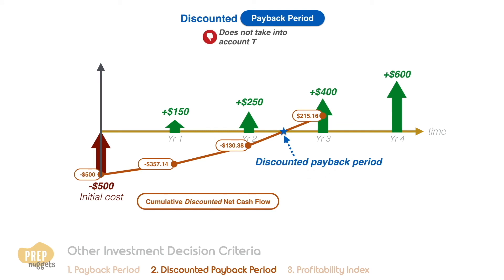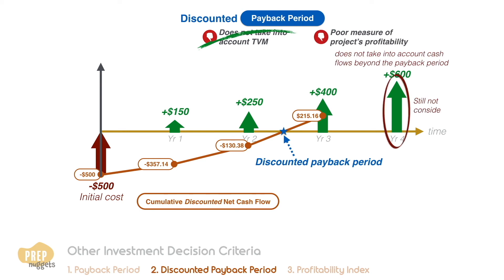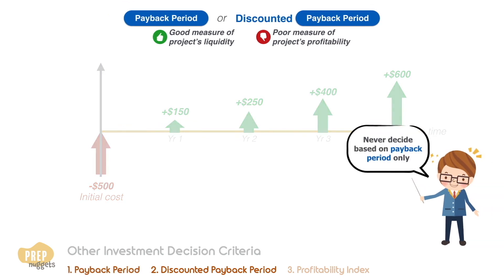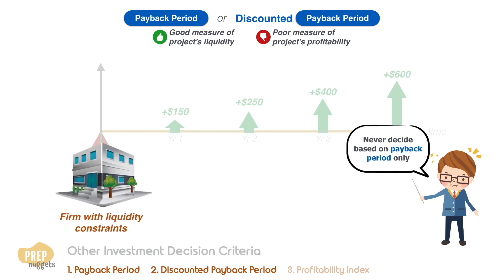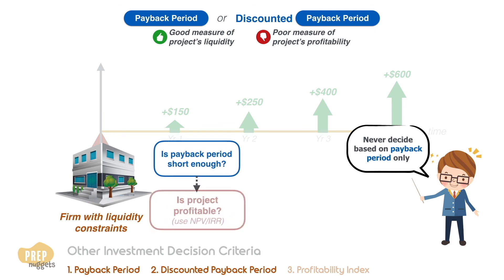While this method addresses the time value of money drawback, it is still a poor measure of profitability as it does not consider cash flows beyond the period, but it is more useful as a measure of project liquidity. As such, project decisions should not be made solely on the basis of their payback periods. This method is more useful for firms with liquidity constraints, who often impose a maximum payback period and then use a measure of profitability such as NPV or IRR to evaluate projects.